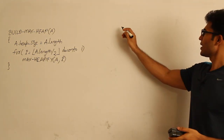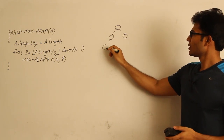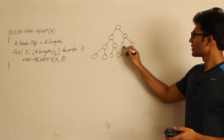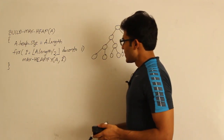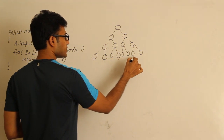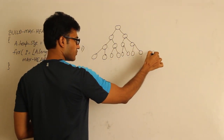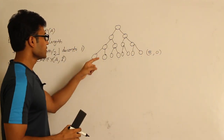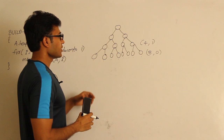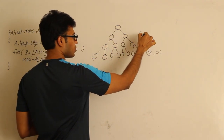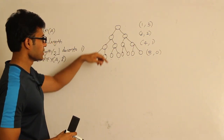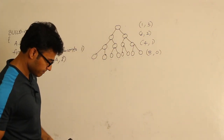Let's say we have a tree like this. We need to know some properties of a complete binary tree. All the leaves are of height 0 — there are 8 such nodes. The next level has 4 nodes of height 1. Above that, 2 nodes of height 2, and 1 node of height 3. The total height of the tree is 3.